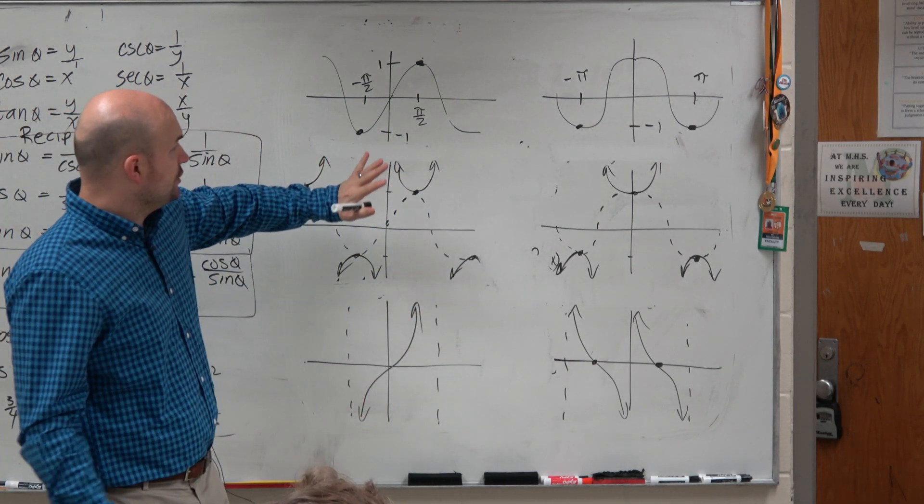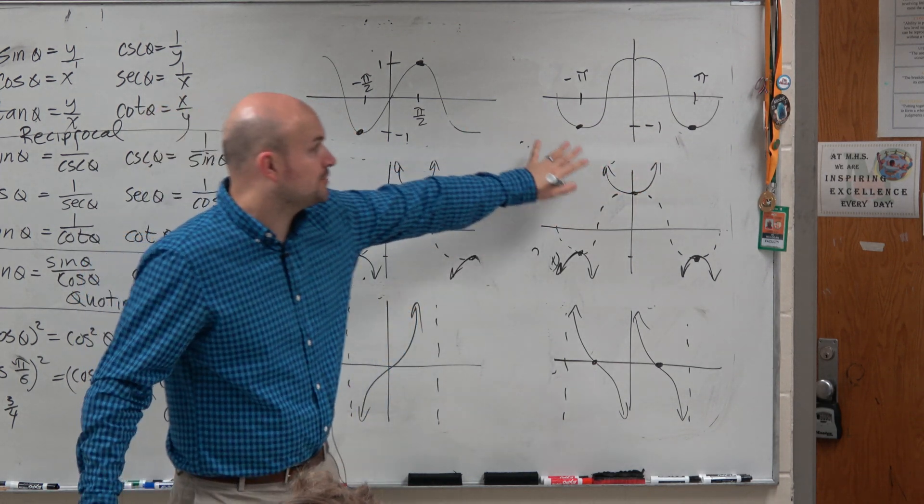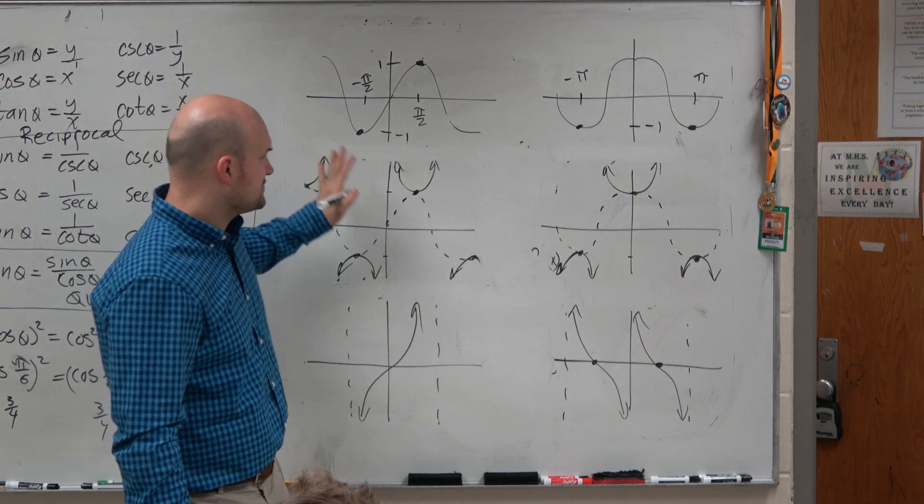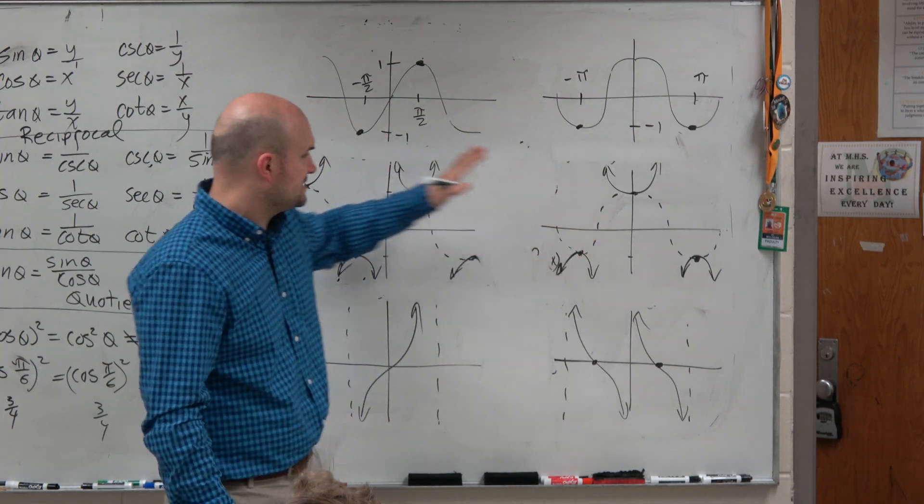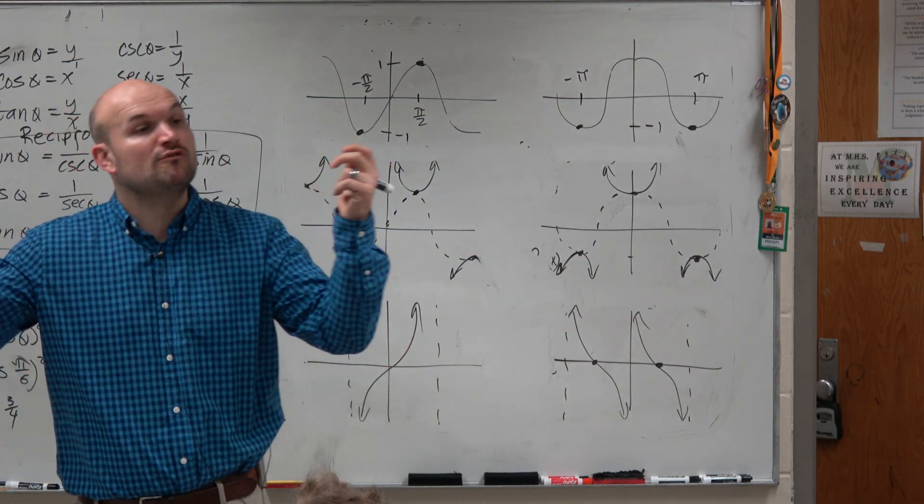Well, the obvious choice is you can only transform sine into cosine, right? And you can only transform cosine into sine. And that works for cosecant to secant, secant to cosecant, tangent to cotangent, cotangent to tangent. Those are what we call co-functions of one another.